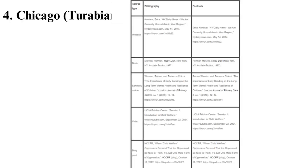4. Chicago/Turabian. Published by the Chicago University Press in 1906, the Chicago/Turabian style is used for business, history, humanities, social sciences, literature, arts, and science assignments. However, you may be requested to use one of two unique methods: notes and bibliography, or author-date.